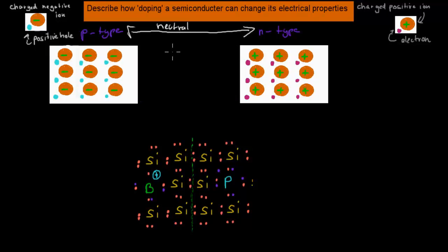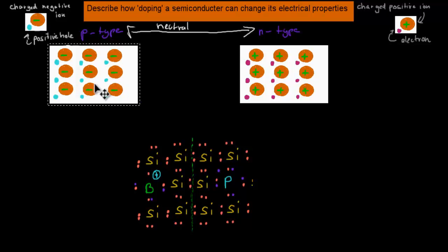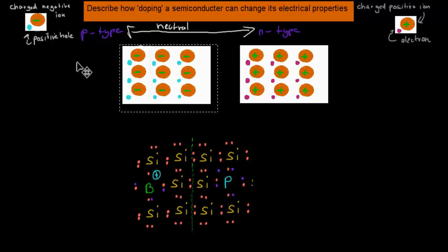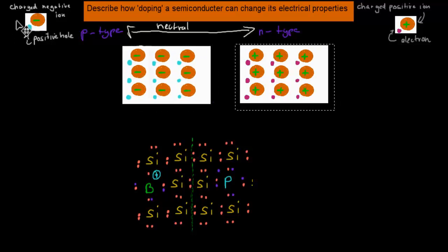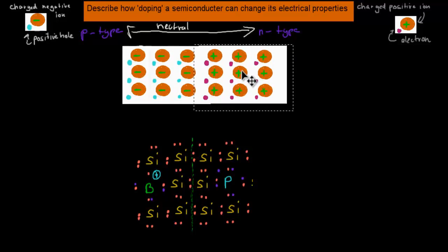Even if an n-type has more electrons than a normal one does, it is still overall neutral — the amount of extra electrons equals the amount of extra protons. But what happens if we bring them together is interesting. If we bring them together, something different happens, and I'm going to show you that right now.